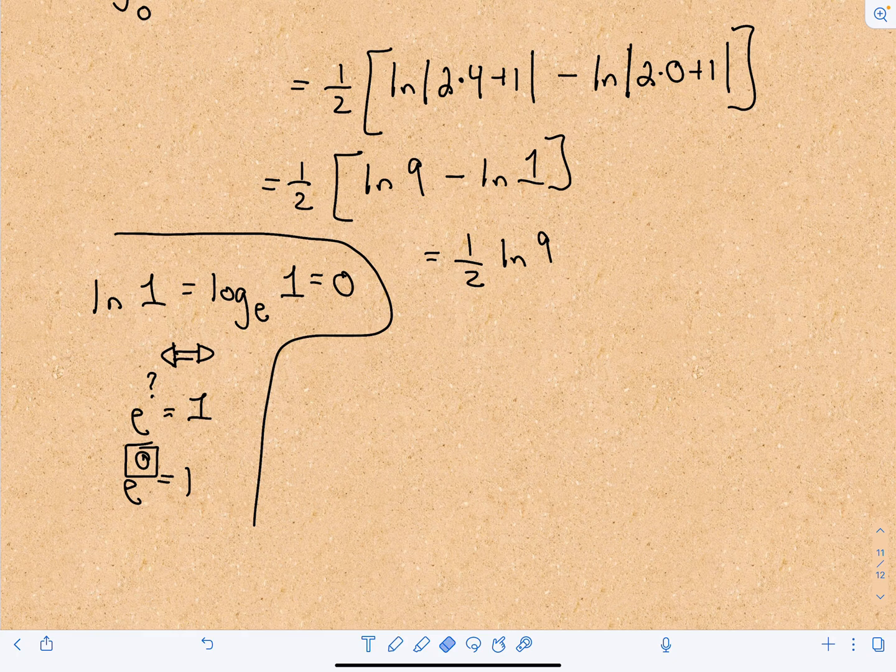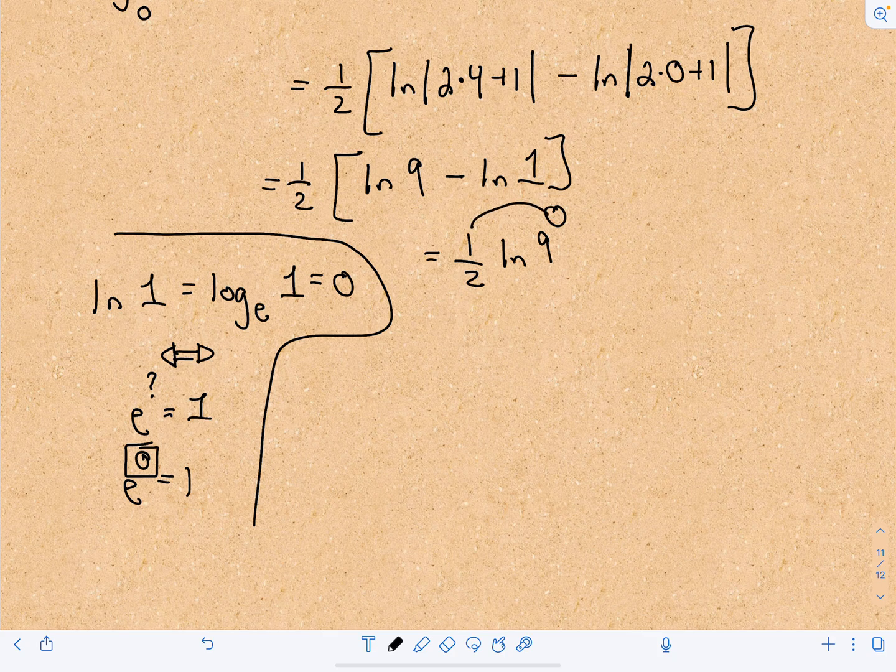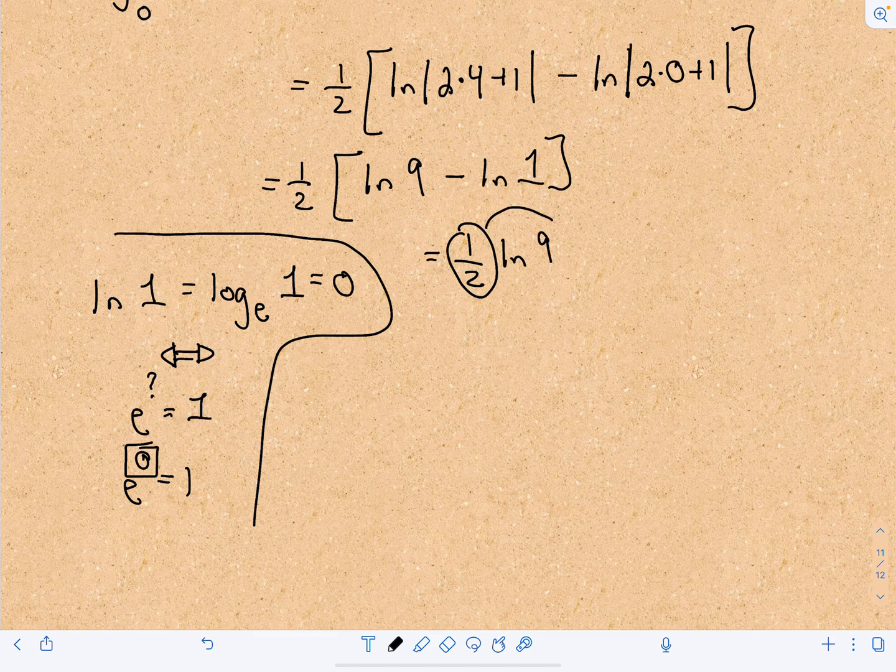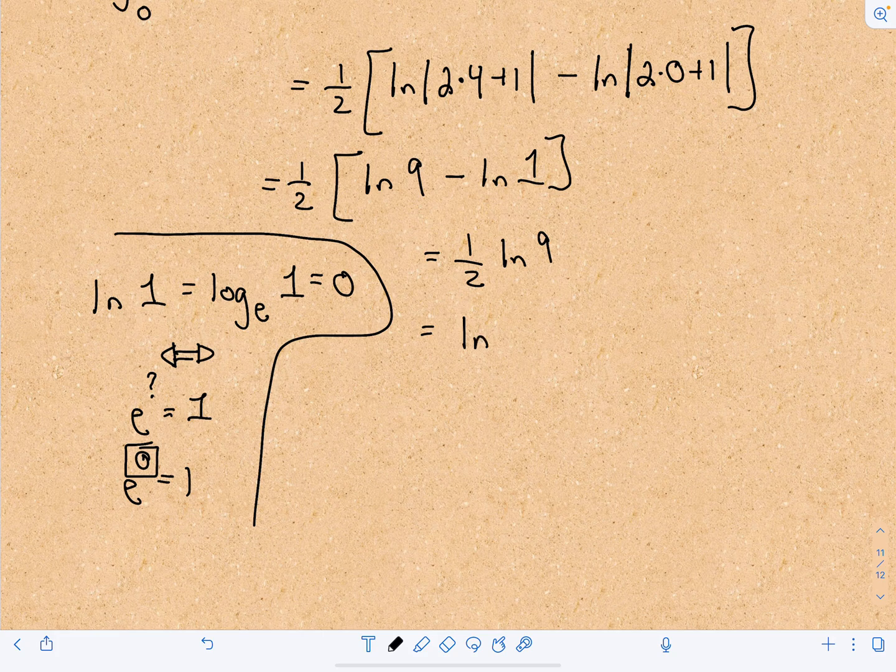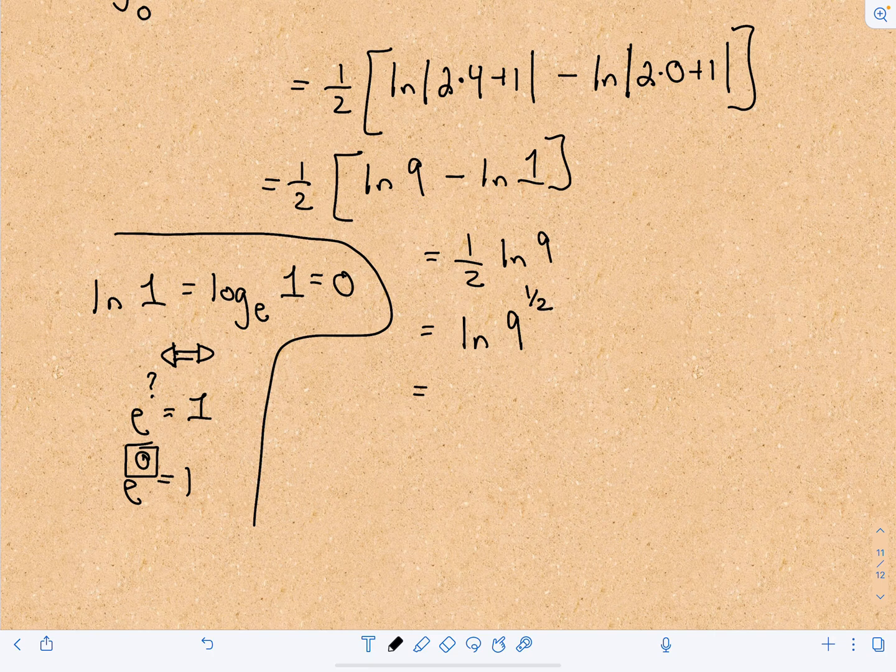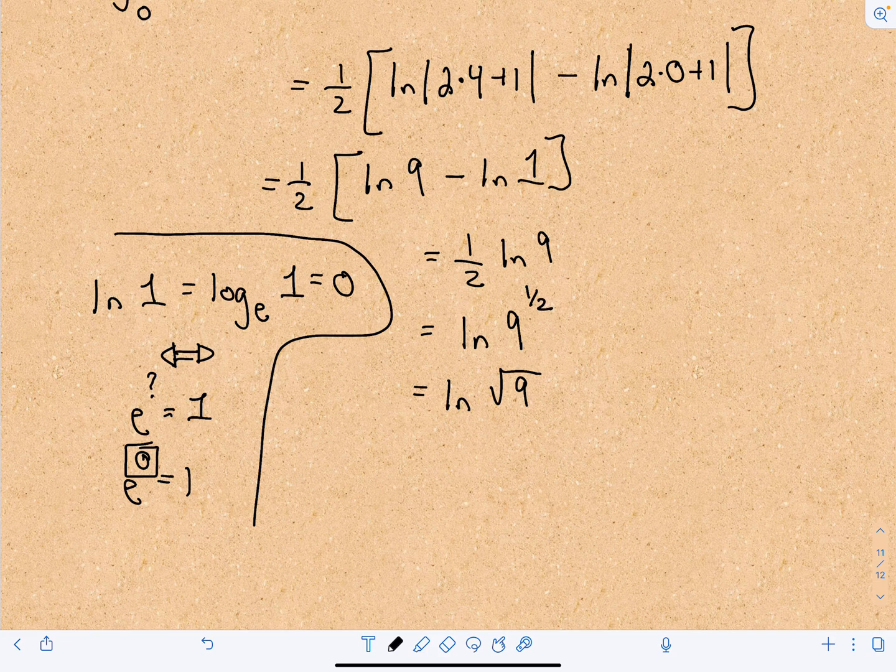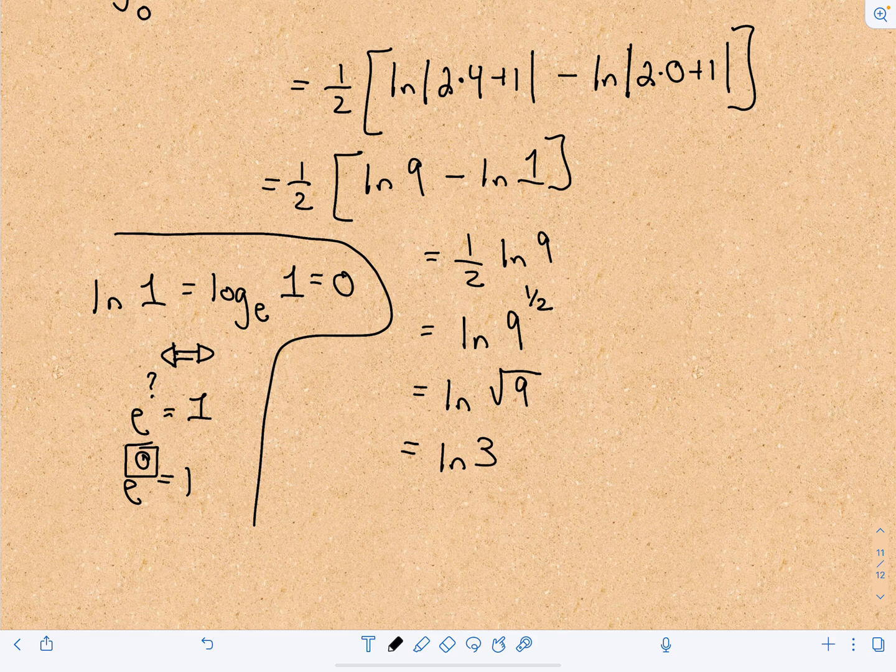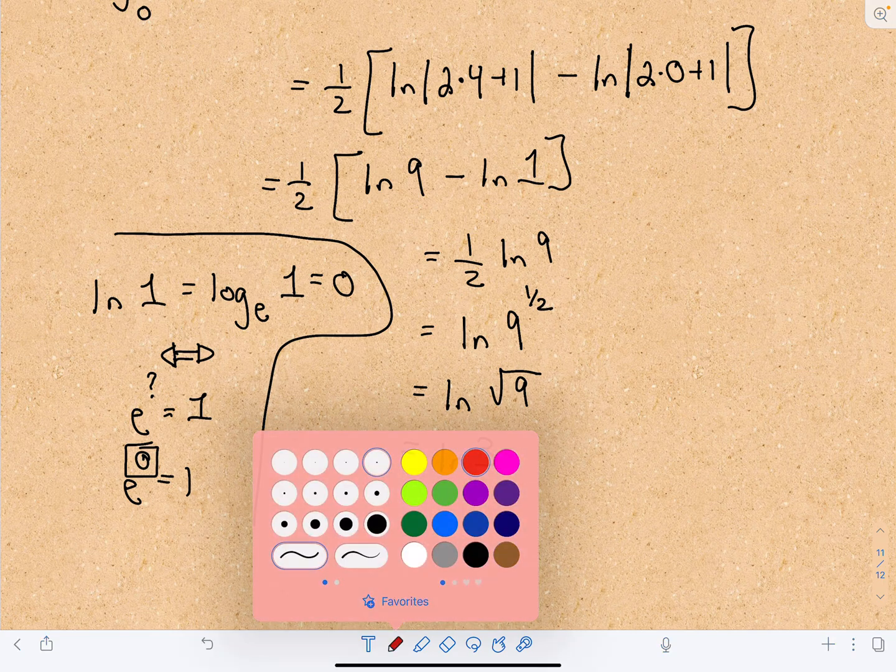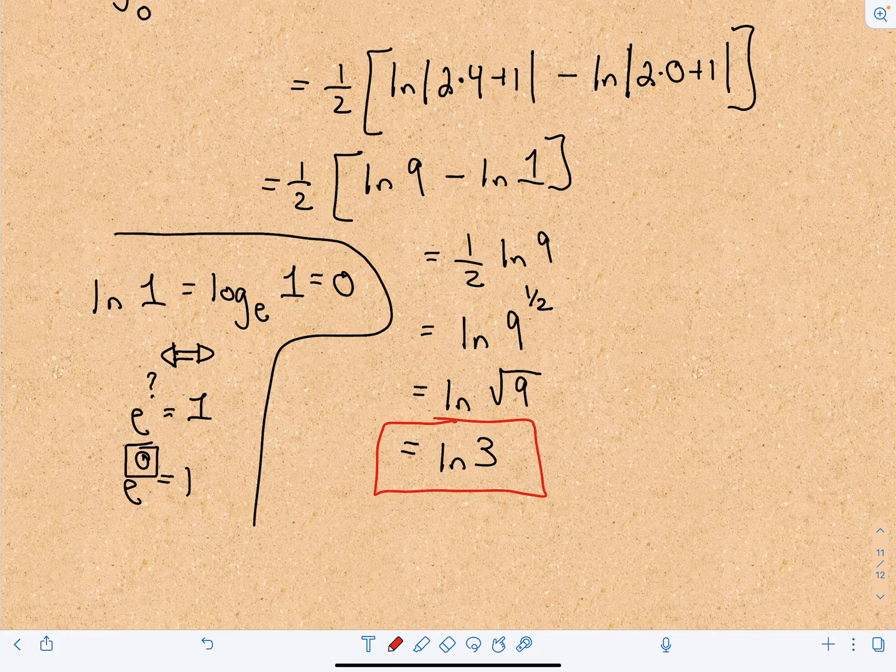We're almost there. Now remember properties of logarithms - exponents can come out as coefficients, but likewise, coefficients can go up as exponents. So I'm going to rewrite this as the natural logarithm of 9 raised to the 1 half power. That's the same as taking the square root, so we have the natural logarithm of the square root of 9, which gives us the natural logarithm of 3. And we've got the solution.